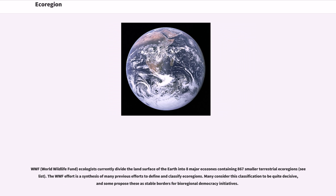WWF ecologists currently divide the land surface of the earth into eight major ecozones containing 867 smaller terrestrial ecoregions. The WWF effort is a synthesis of many previous efforts to define and classify ecoregions. Many consider this classification to be quite decisive, and some propose these as stable borders for bioregional democracy initiatives.